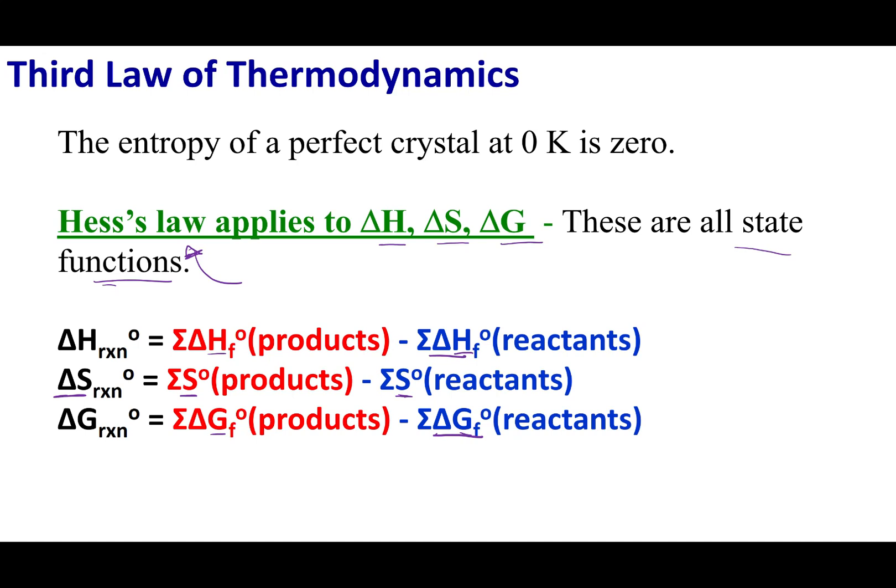The third law of thermodynamics says that if I take any material, make it into a perfect crystal and put it at zero degrees Kelvin, the entropy of that is zero. Because there is only one microstate, one way to do that. And if there's only one way to do that, there's no disorder in that system. That is the lowest entropy that I can achieve, zero entropy.